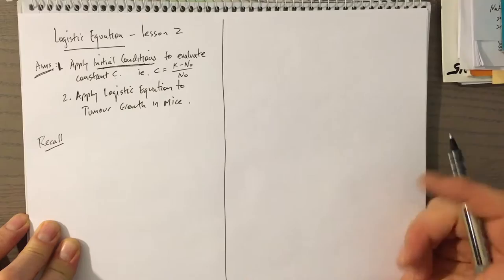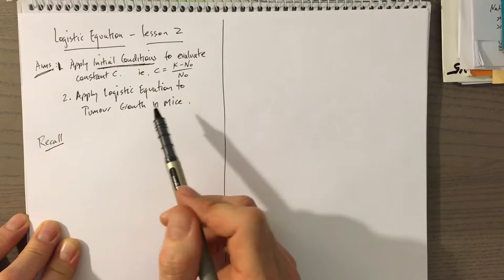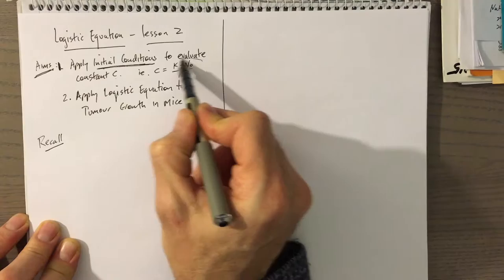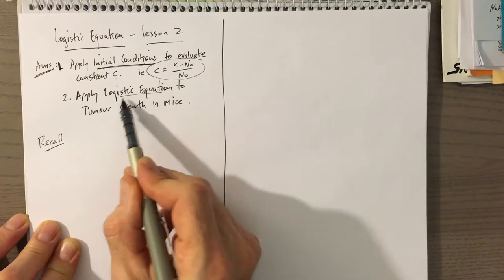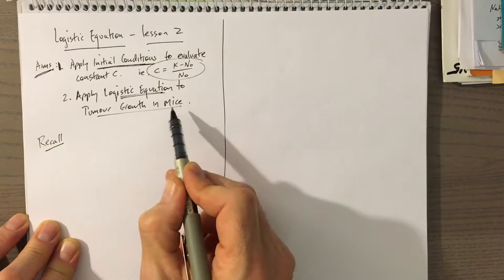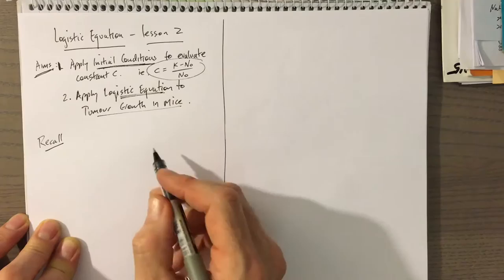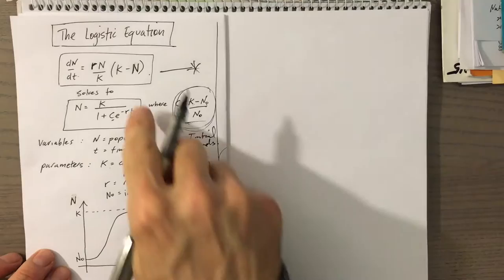Welcome back Year 12, this is Mr. Mayor here for Lesson 2 on the logistic equation. The aims of this video will be twofold: first, we'll find the initial conditions to evaluate the constant C, and second, we'll apply the logistic equation to a particular example — tumor growth in mice — based on a paper I found online. I'll put a link to that in Schoology.